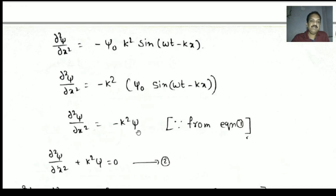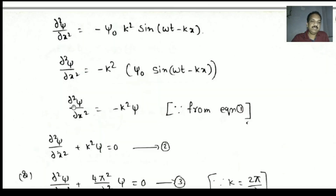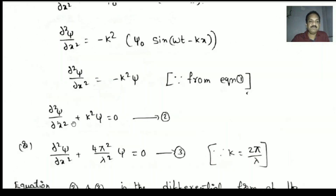Substituting psi: ∂²ψ/∂x² = −k²ψ. Therefore ∂²ψ/∂x² + k²ψ = 0. This is equation number 2.